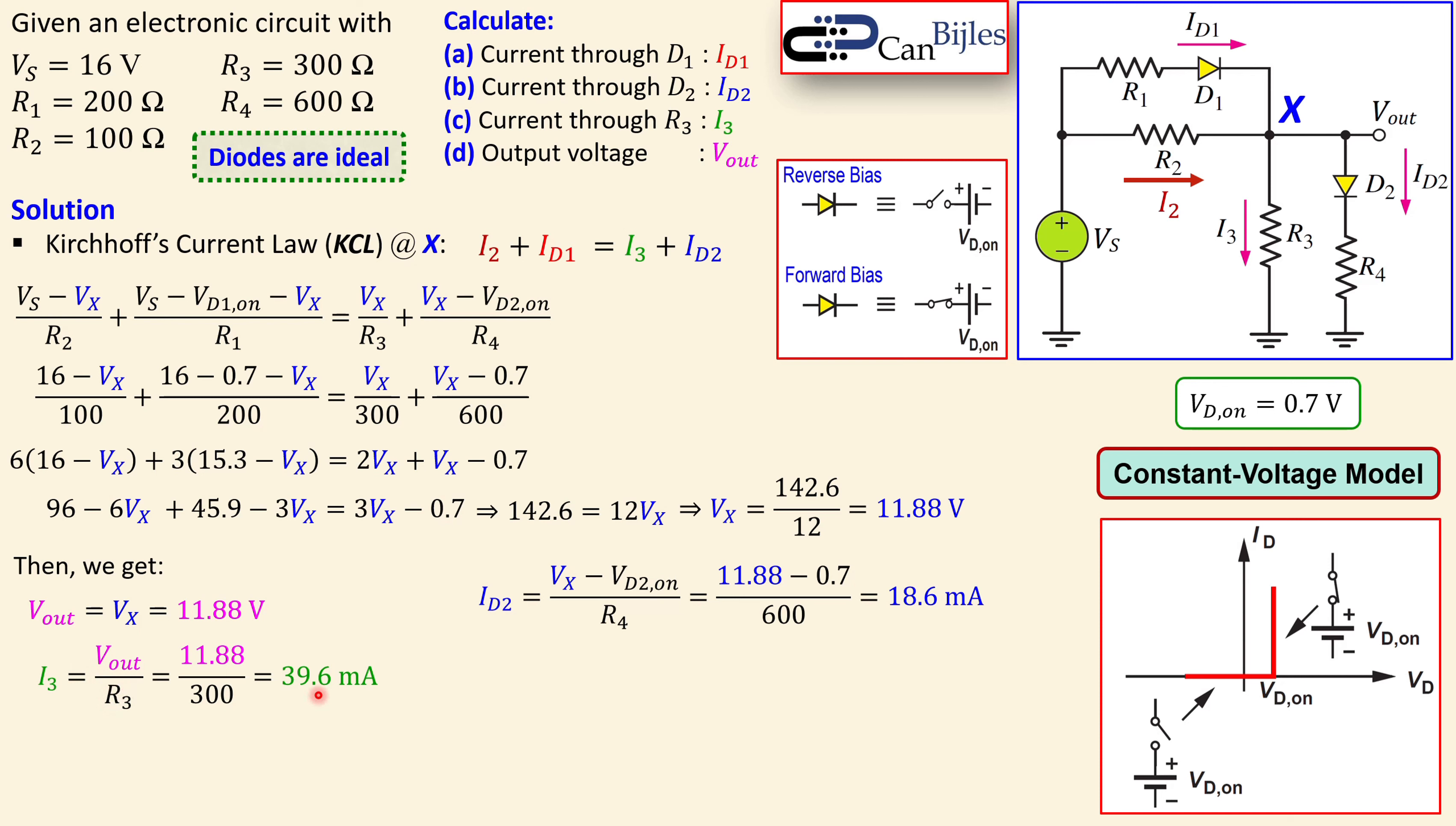Now we also want to know I2 because for the calculation of ID1 I need I2 since this expression requires that. So I2 is Vs minus Vx over R2, which will give me 41.2 milliamps. Now we are almost done. So we can say what is ID1. We can again use this equation, just repeat here. Substitute the values we have just determined: 0.0412 and also the other ones, I3 and ID2. Now we can calculate ID1. Just simple addition, etc. So it will give you exactly 17 milliamps.